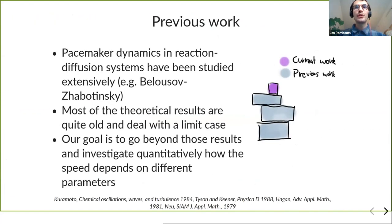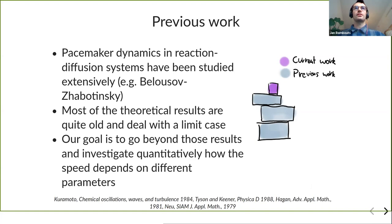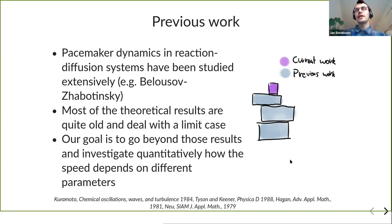I want to mention some previous work, because the pacemaker problem is not new and there have been many studies, more related to chemical systems such as the Belousov-Zhabotinsky reaction. However, most theoretical results are reasonably old — the main references are from the 1980s and late 1970s. They often deal with limit cases, for example the complex Ginzburg-Landau equation, oscillations close to Hopf bifurcation, or extreme timescale separation with very sharp wave trains. What we want to do here is go beyond that and more quantitatively study the effect of all the different parameters on wave speed and envelope speed.